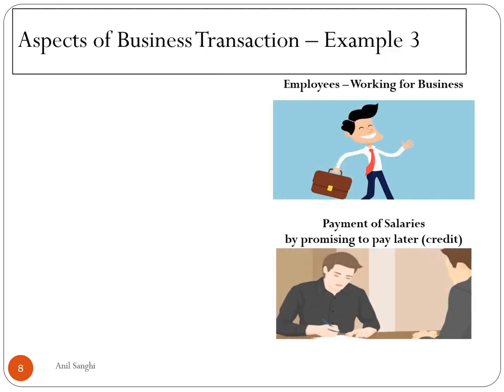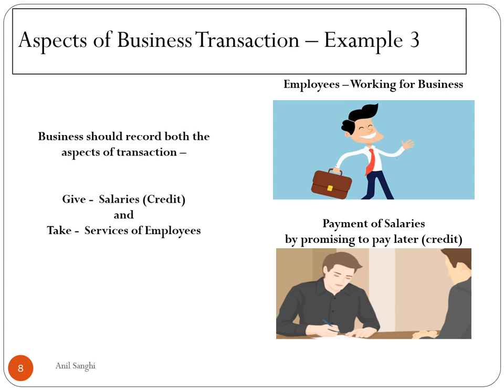Another example: employees work for us and at the end of the month we are expected to pay them salaries. There are times when salaries have not been paid on the 31st of the month — we pay them later. So what is happening? There is a promise to pay. Should we record this transaction even though we have not given anything yet? Yes, we should record it, because in business even the promise to pay constitutes an obligation. Our employees become our creditors until we pay them, creating a liability. So we record both sides: giving salaries and availing the services of the employees.